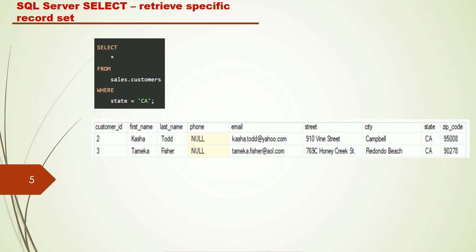The SQL Server SELECT statement can also retrieve a specific record set — meaning you want to view some specific records. You can specify a condition, or what we call criteria, using the WHERE clause. For example, specifying WHERE state = 'CA' will display only those records whose state is CA.